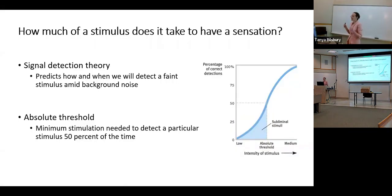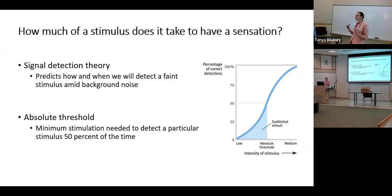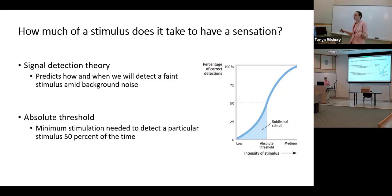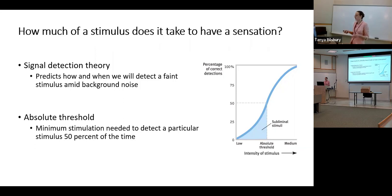It takes a certain amount of stimulation for us to sense a stimulus. If I spoke at half the volume you could still hear me, but if I kept going softer and softer, there would come a point where you can't hear it anymore — it would get harder to pick up over background noise. At some point you might only hear it about half the time. That's called the absolute threshold — the point at which we can detect a stimulus half the time it's present. The other half the time, it escapes notice.